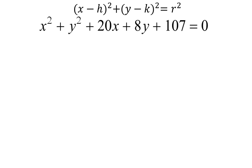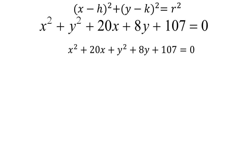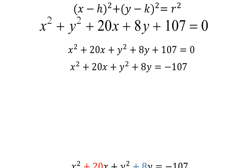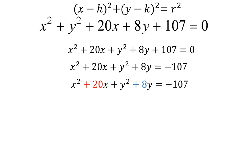I have x squared plus 20x plus y squared plus 8y, and I'm going to leave 107 where it is for now. Then in my next step, I'm going to move the 107 — it's a positive 107, so to move it to the other side, I have to subtract 107. Now I'm going to highlight the number in front of x, which is positive 20, and the number in front of y, which is positive 8.